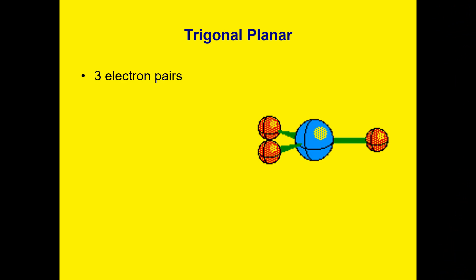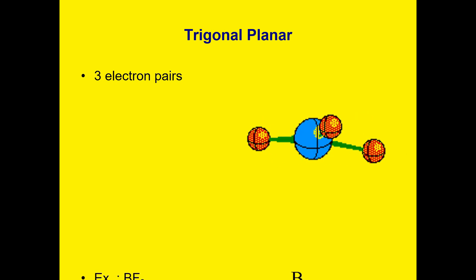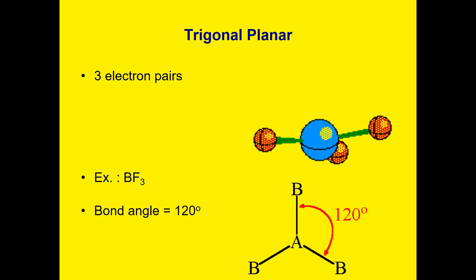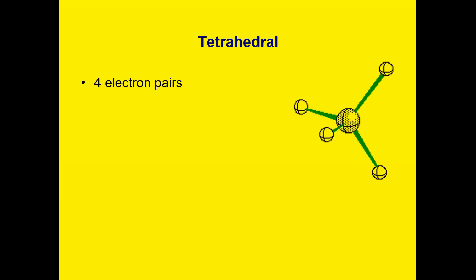Next, trigonal planar. We have three electron pairs. Example is boron bonded with fluorine. We have a bond angle of 120 degrees.